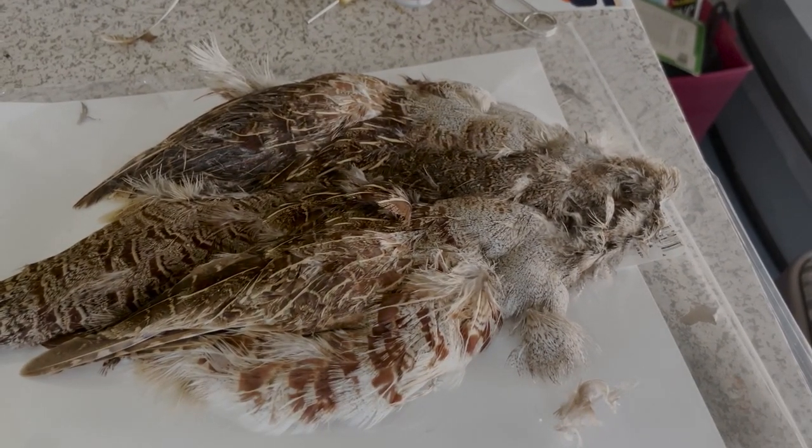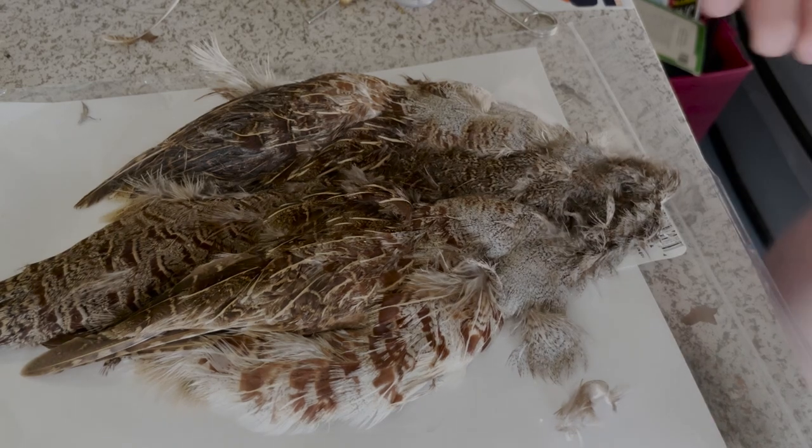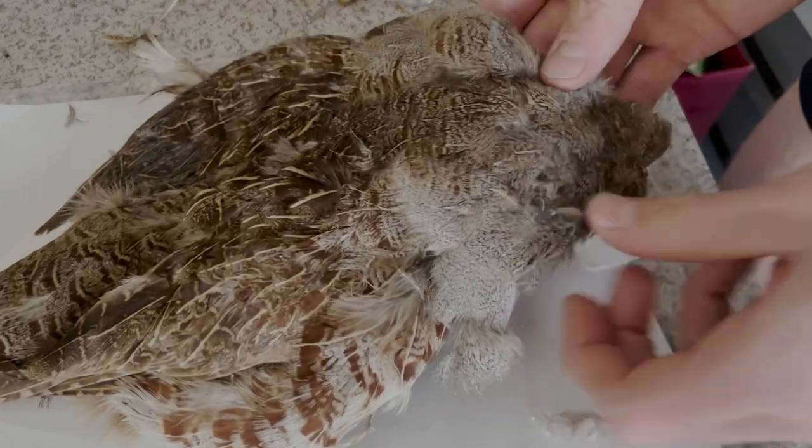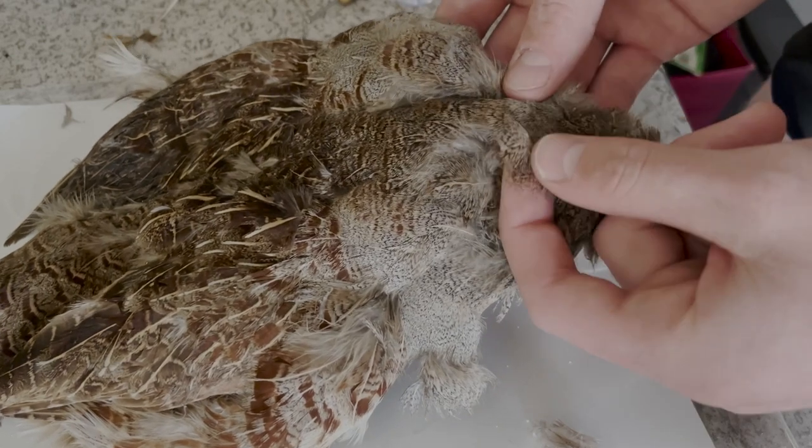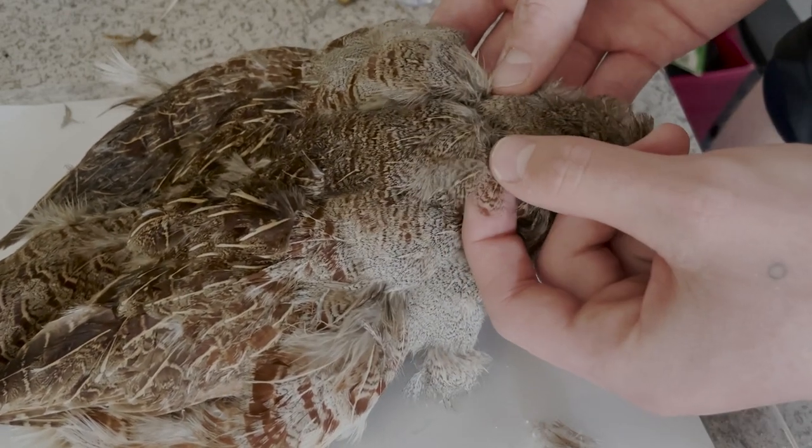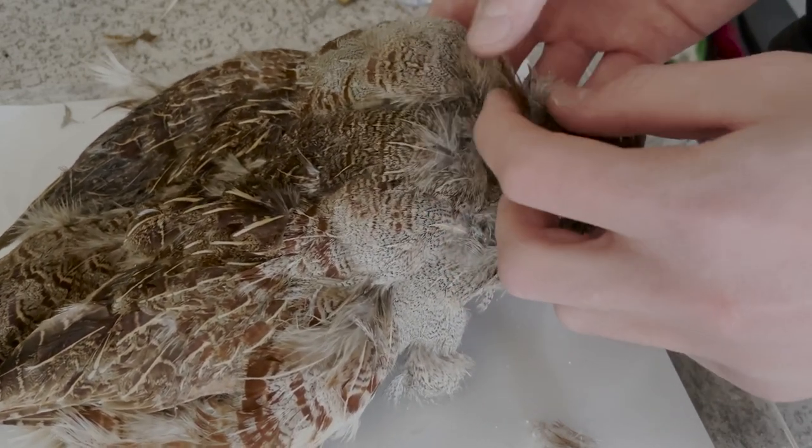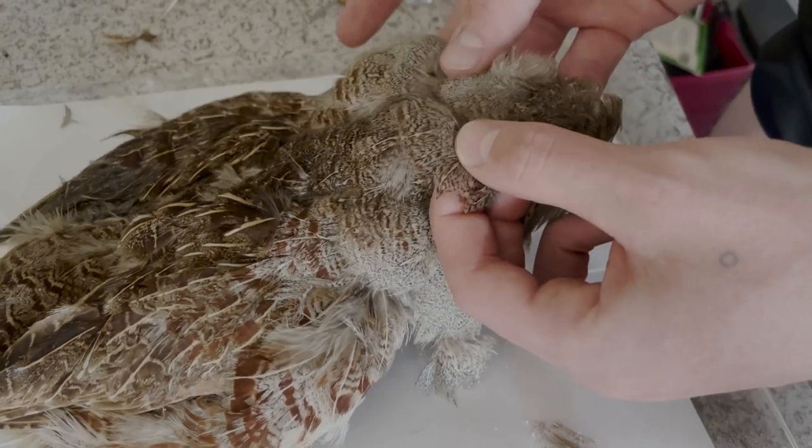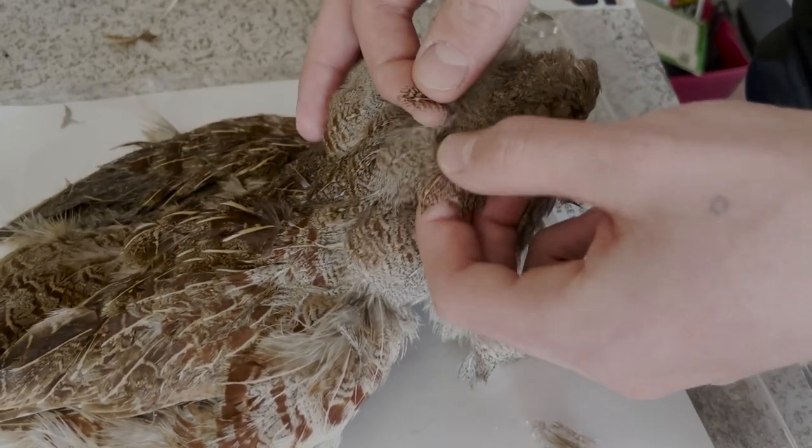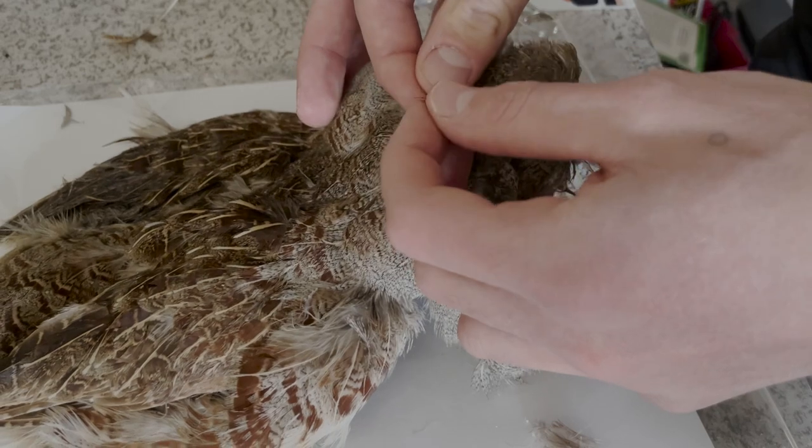For the collar and the hackle of your fly, you'll want to select a feather from closer to the head where they're a little bit smaller and they have these nice markings. A feather like this one here would be great. All you need to do is grab it and pluck it off.